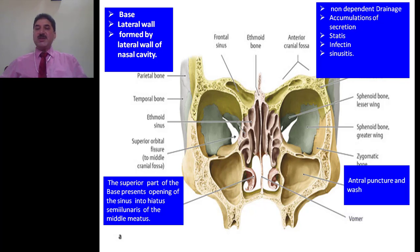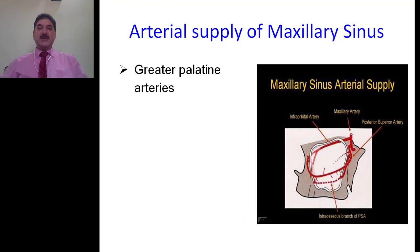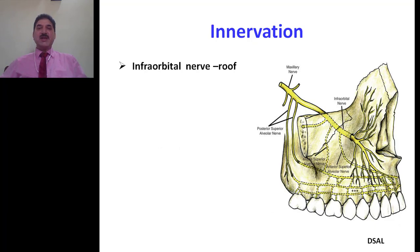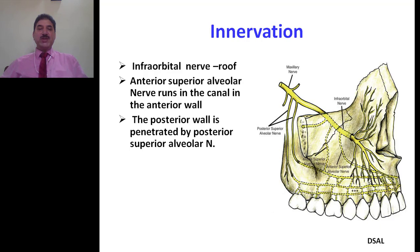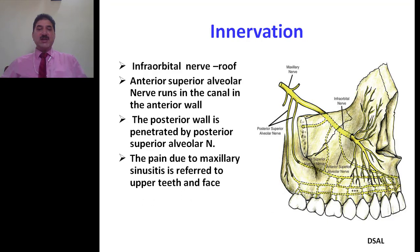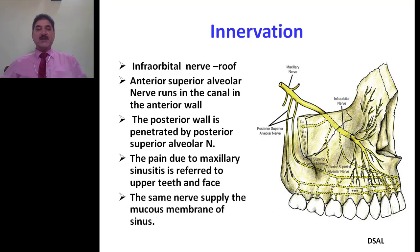A surgical procedure called antral puncture is done to take out the secretion from the maxillary sinus. Arterial supply of the maxillary sinus is from the greater palatine arteries, infraorbital artery, and also by the facial artery. The sinus is innervated by the infraorbital nerve, which lies in the roof of the sinus and leaves through the infraorbital foramen. It is also supplied by the anterior superior alveolar nerve, which runs in a canal in its anterior wall. The posterior wall is penetrated by the posterior superior alveolar nerve. The pain due to maxillary sinus disease is referred to the upper teeth and face.